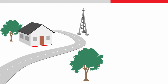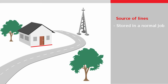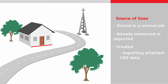Let's take a look at where our line might come from. As described in other Stake to Line videos, to be used in the Stake to Line app, the line must exist in a normal job. Either the line already exists in the job — for example it was already measured or imported — or it will need to be created, for example by importing attached CAD data or by creating a new line using existing points.